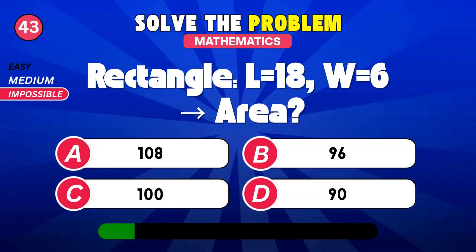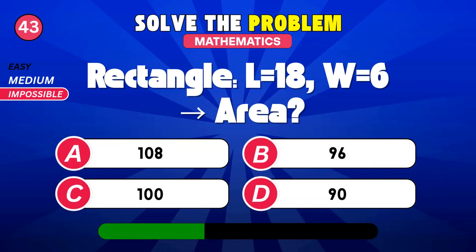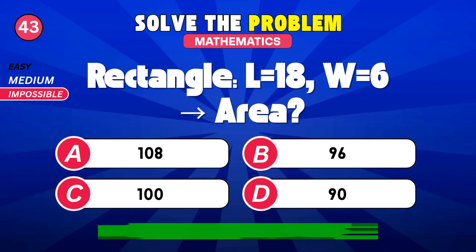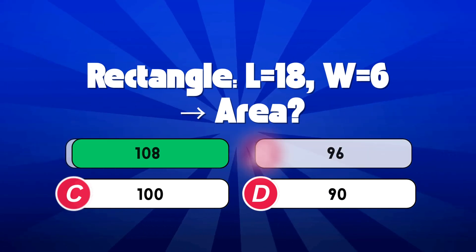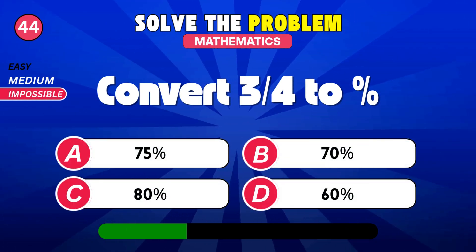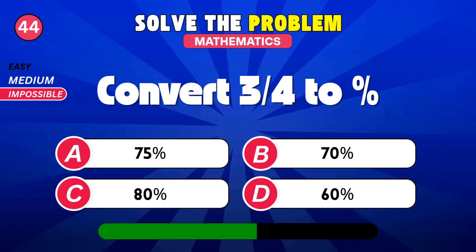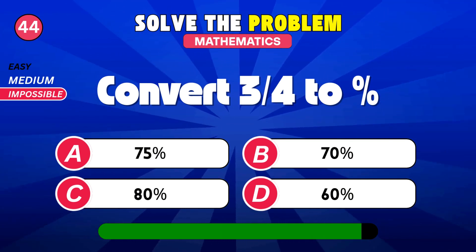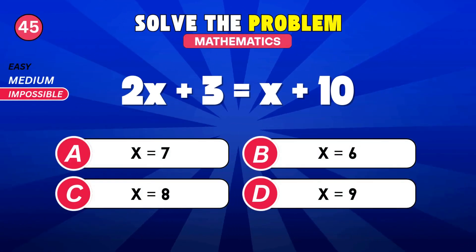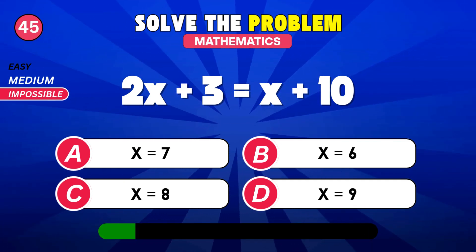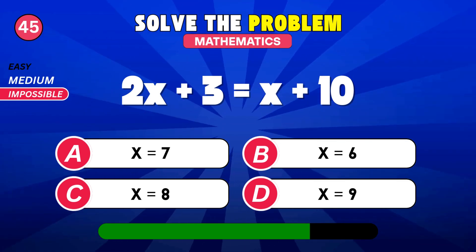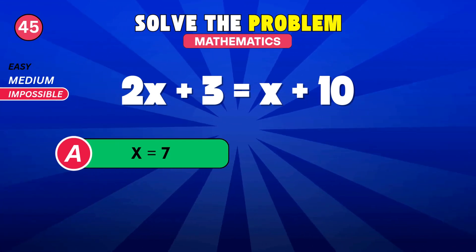Find the rectangle area. 108. Convert 3 quarters to percent. 75 percent. Find value of x. 7.